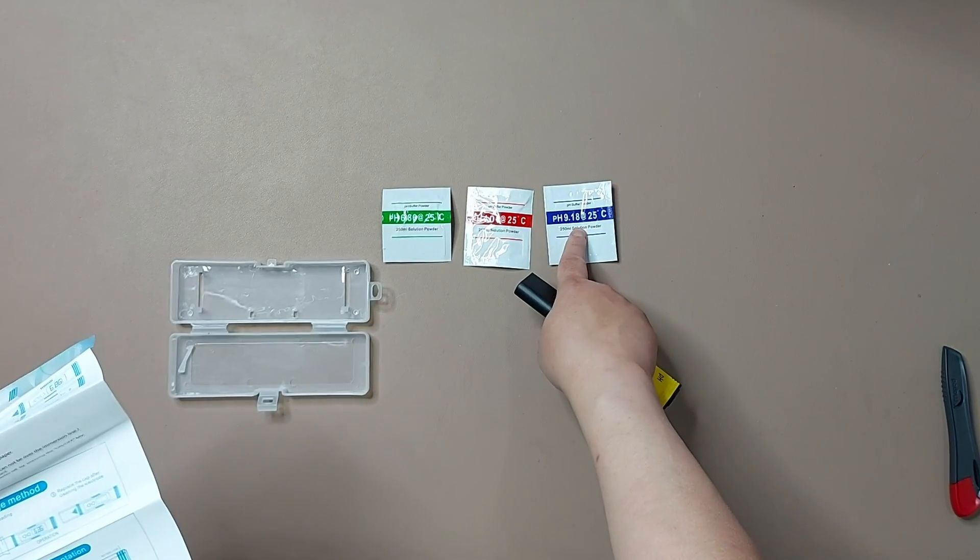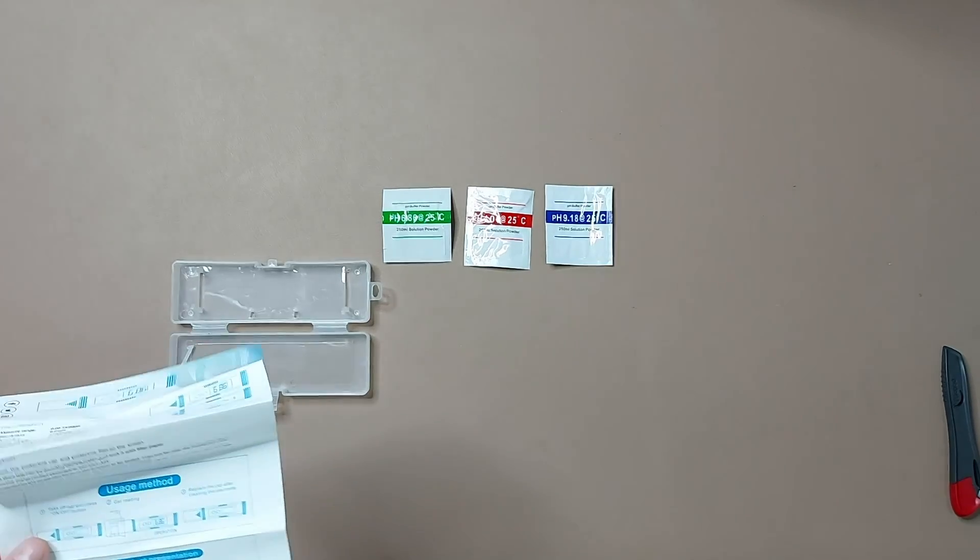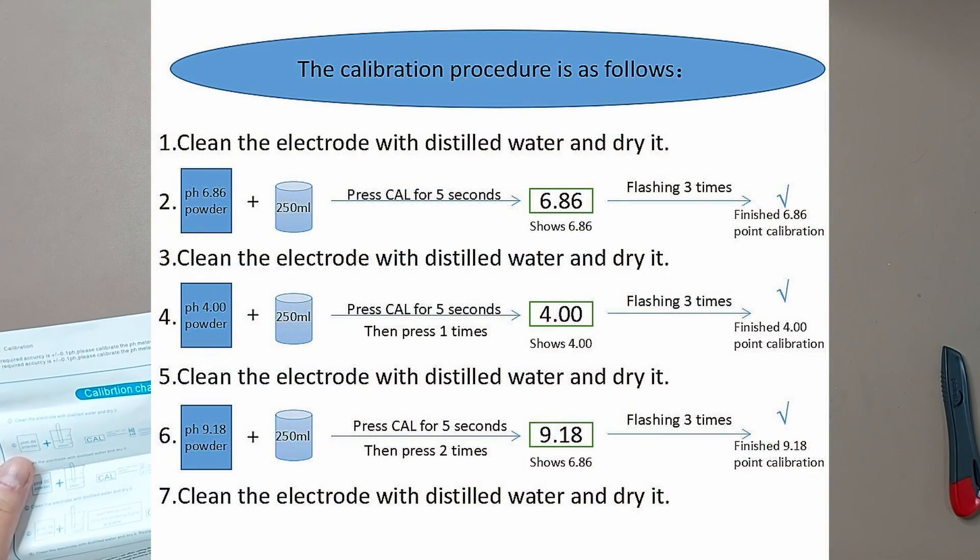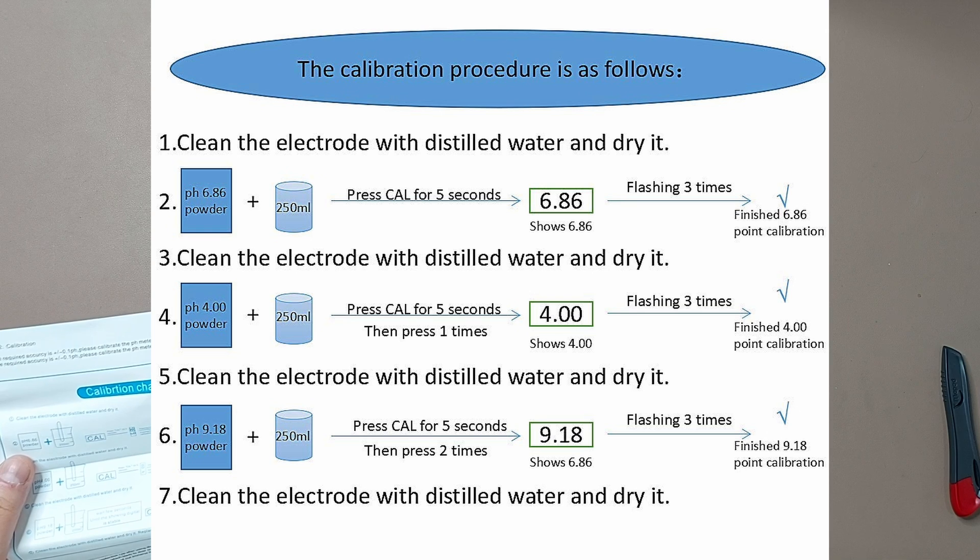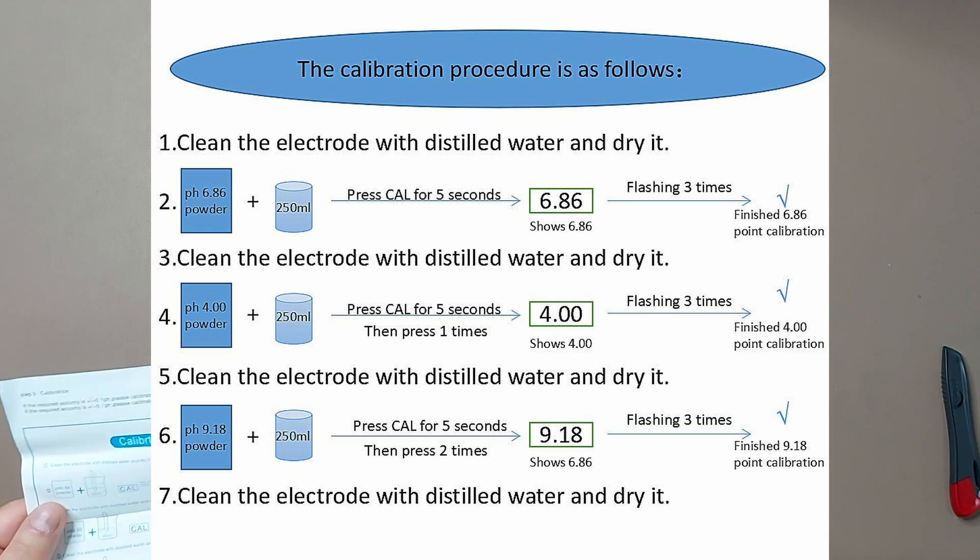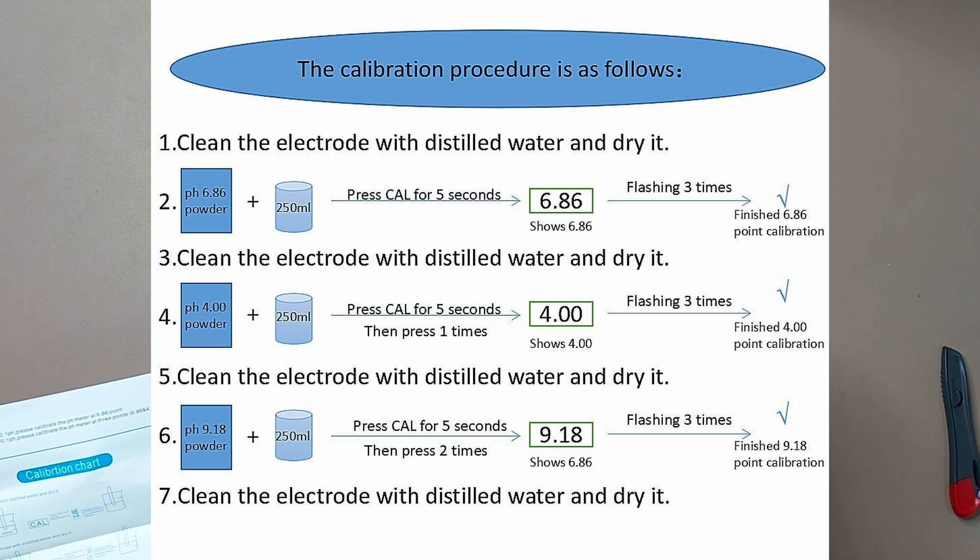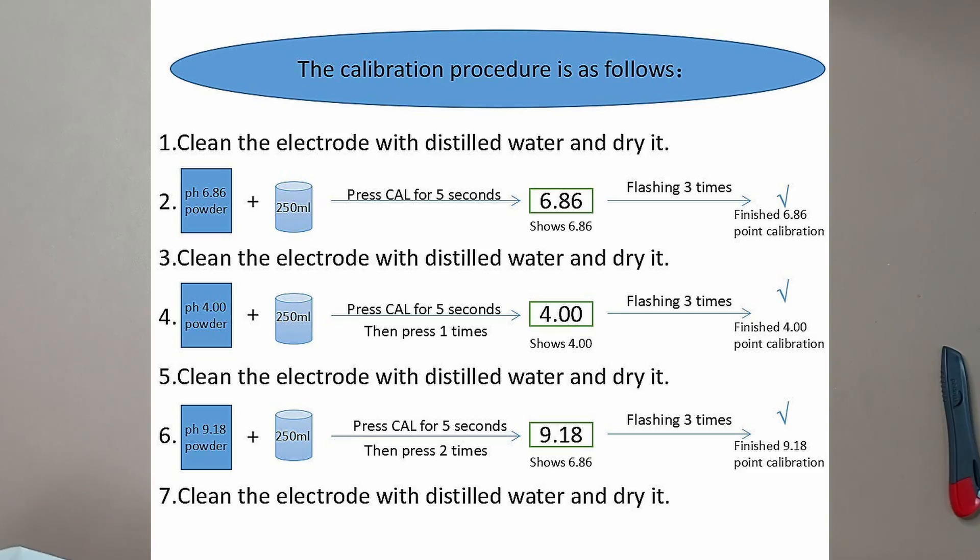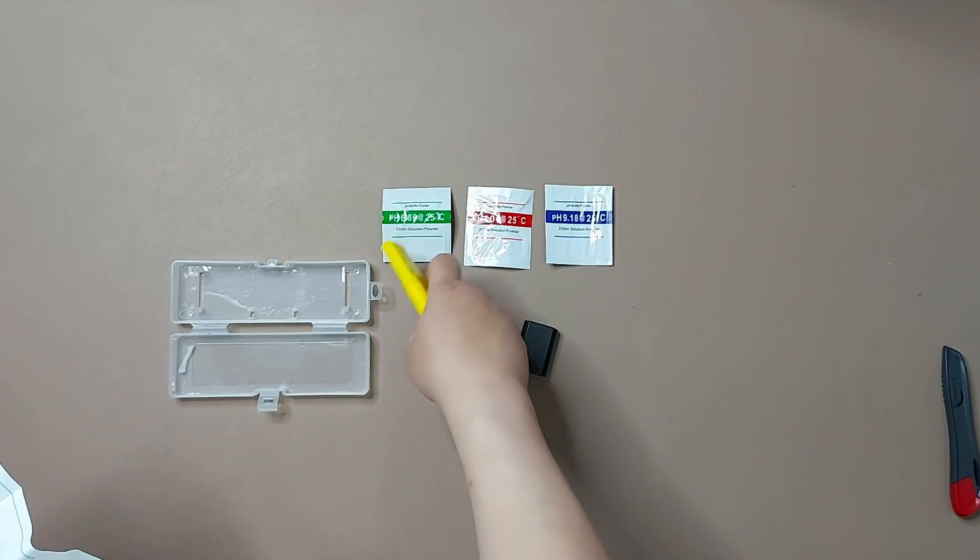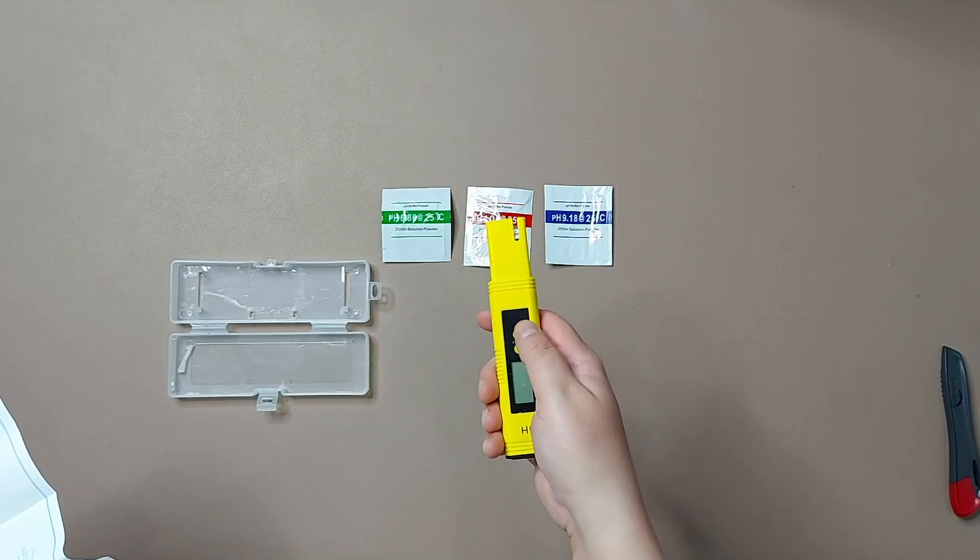Stir gently until the powder is dissolved, then clean the electrode with distilled water and dry it. First of all, this is the first step. Second step: we will insert this electrode into the pH 6.86 solution to calibrate. Because you know the pH level of that one, it will calibrate the reading to 6.86.